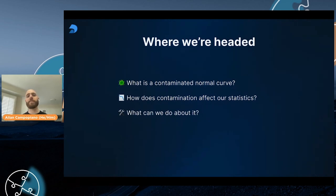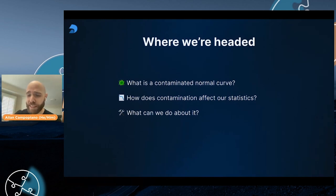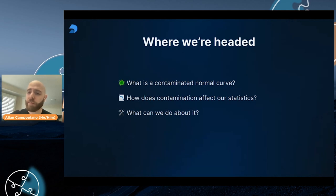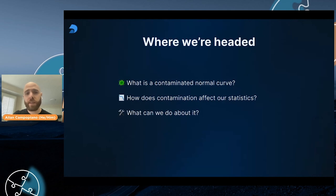So where are we headed with this talk? Well, first of all, what is a contaminated normal curve? I'm going to describe that to you, and it turns out that contamination is something we should expect when dealing with statistics. But how does contamination actually affect our statistics? I'm going to give you some live demonstration and provide some learning resources. And of course, what can we do about it? I'll introduce a new Python library that can help deal with issues of non-robust statistics.